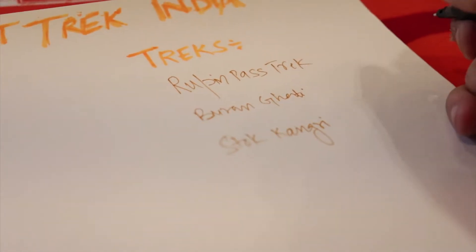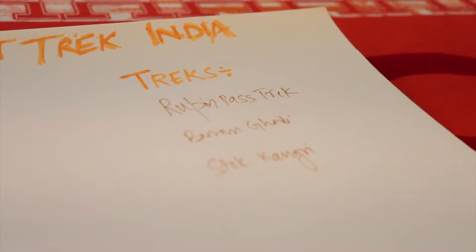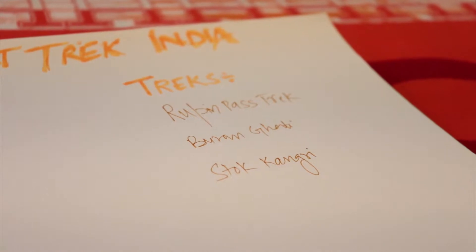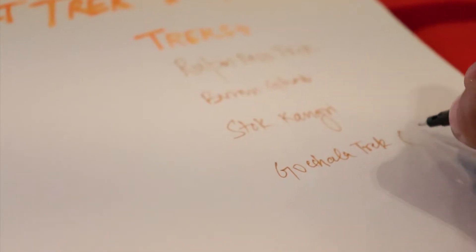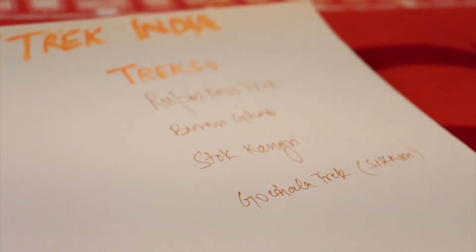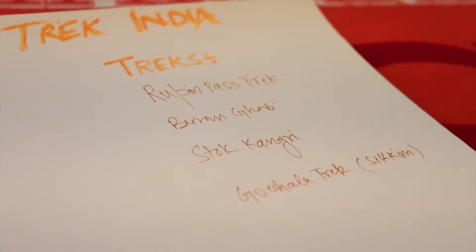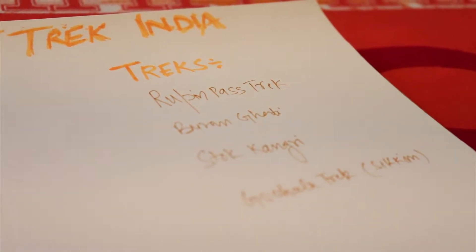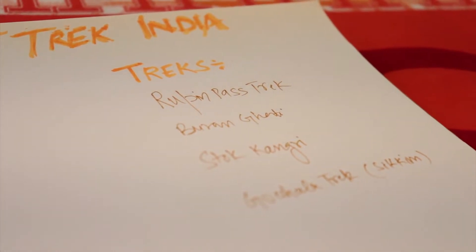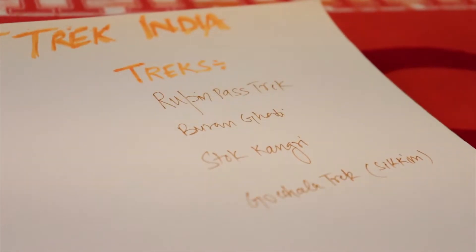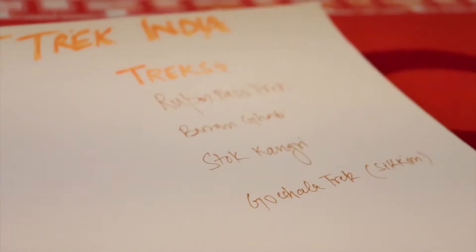Fourth track is Goechala track. The Sikkim region is not that famous for tracks but has the third highest peak, Kanchenjunga. The mountains in this region are kind of sacred, and people don't really do tracks in these regions that often.